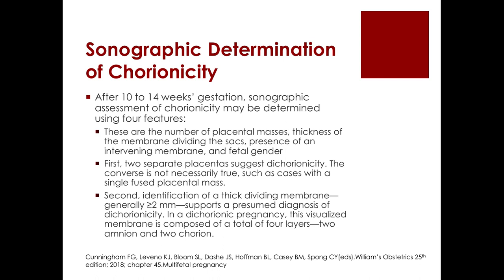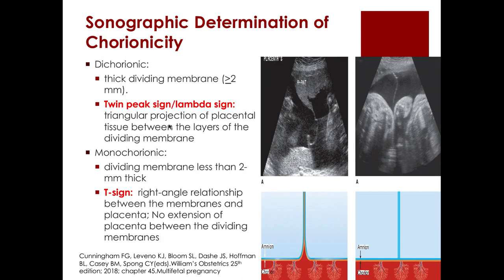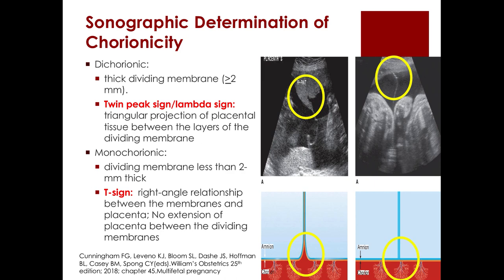In a dichorionic pregnancy, the visualized membrane is composed of four layers — two amnion and two chorion. This thick membrane of more than two millimeters gives rise to the twin peak sign or lambda sign, which is a triangular projection of placental tissue between the layers of the dividing membrane. For a monochorionic pregnancy, the dividing membrane is less than two millimeters thick and produces the T sign, reflecting a right-angle relationship between the membranes and the placenta with no extension of placenta between the dividing membranes.